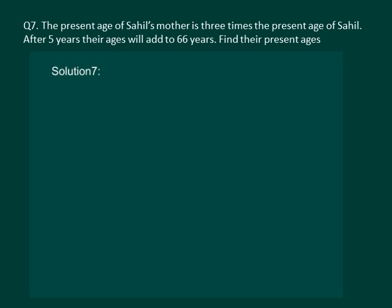To solve this question, let us approach it stepwise. The present age of Sahil's mother is 3 times the present age of Sahil. So let us suppose that the present age of Sahil is x years. Then the present age of Sahil's mother is 3x.